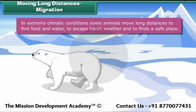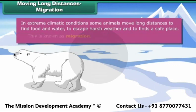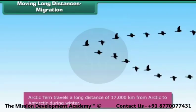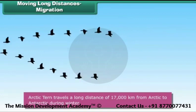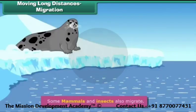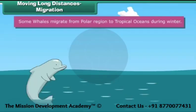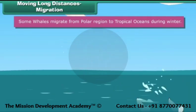Moving long distances — migration: in extreme climatic conditions, some animals move long distances to find food and water, to escape harsh weather, and to find a safe place. This is known as migration. The arctic tern travels a long distance of seventeen thousand kilometers from the Arctic to the Antarctic during winter. Some whales also migrate from polar regions to tropical oceans during winter.